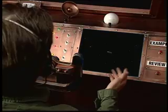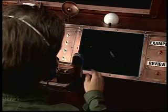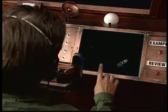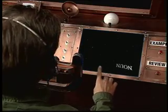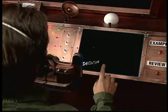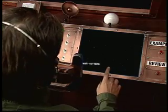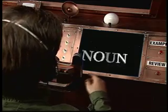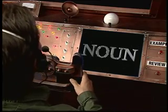That was smooth. Let's check the screen while I give you some background information about the noun. A noun is a word that names a person, a place, a thing, a concept, or an idea. The noun was probably the first part of human speech, since we had to have a name for everything so we could talk about stuff.